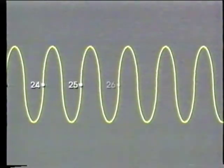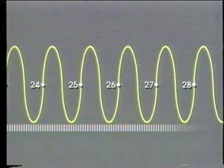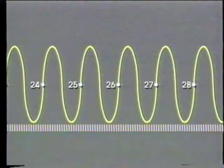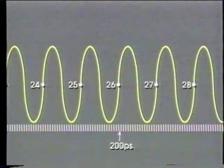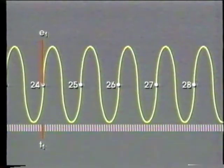As each zero crossing is detected, an event counter counts the event. Simultaneously, a time counter counts clock cycles that are effectively 200 picoseconds long. Then, at predetermined intervals defined by the user, trigger events and associated times are latched and stored.